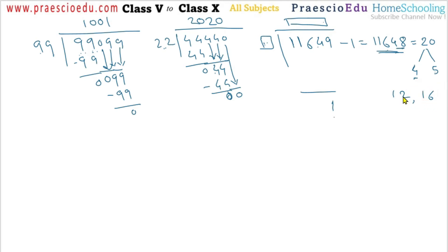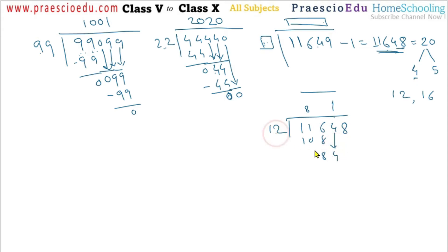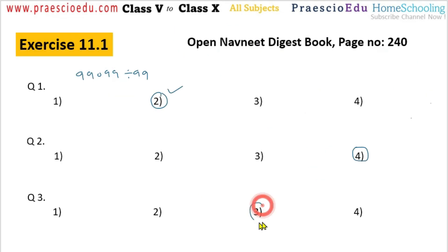Checking for 12: dividing 11,648 by 12 — 8's are 108, balance 8, bring 4 giving 84, and 12×7=84, balance 0, then bring 8 — remainder 8, which cannot be divided by 12. So 12 is not the answer. The possibility is 16, and 16 is given in option number 3. We can cross-check — 11,648 can be divided by 16, so option number 3 is the correct one.